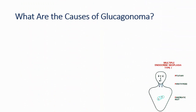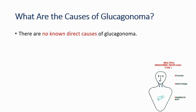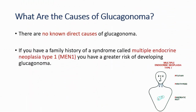As for causes, there are no known direct causes of glucagonoma. But if you have a family history of a syndrome called multiple endocrine neoplasia type 1, also called MEN1, you have a greater risk of developing this tumor. MEN1 affects the pituitary, parathyroid, and pancreatic islet — and since this tumor arises from the pancreatic islet, you need to be aware of this.